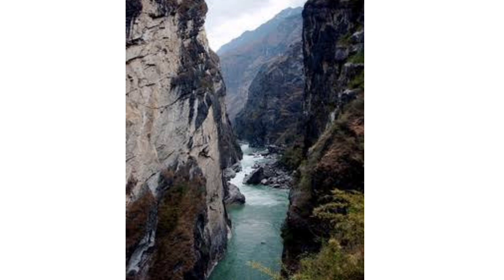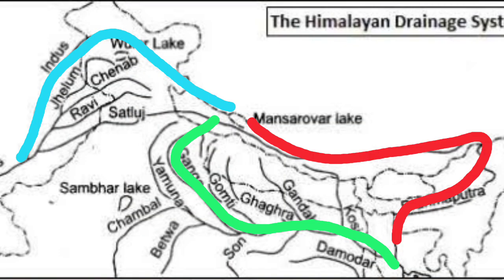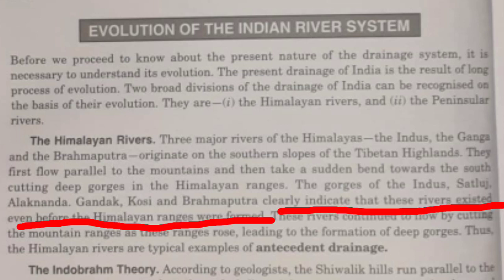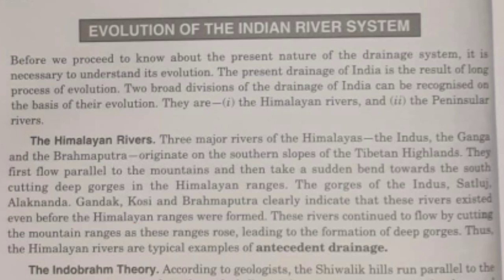A gorge is the deep down-cutting of river valleys. Due to the presence of these gorges, it is also believed that those rivers existed even before the Himalayas came into existence, which means the rivers were already present over there. This is a typical example of antecedent drainage.